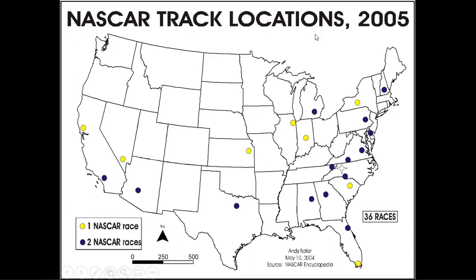Here is a great map that has all those elements: title, author, date — date is important because a map made in the 1970s might not include countries like Eritrea or South Sudan. We have the source of the data, a legend or key, the north arrow also known as the compass rose, and a scale. This map contains all the good elements.